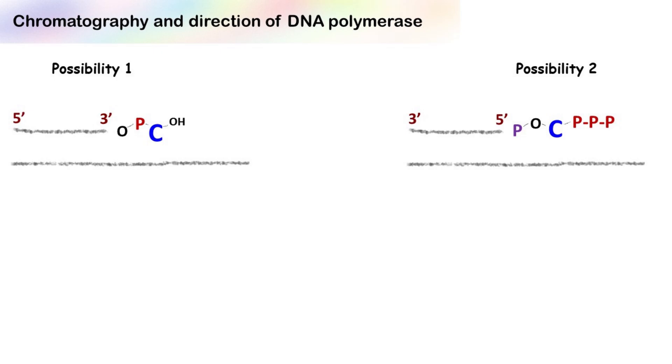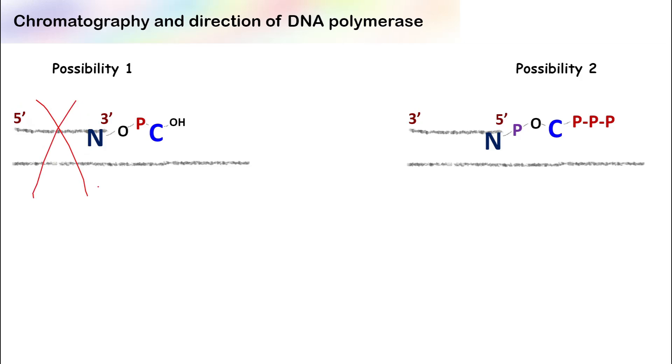Now after this reaction, the DNA was hydrolyzed. So when the DNA was hydrolyzed, this whole portion will be gone. Now let's say the nucleotide adjacent to cytosine is N. N can be any nucleotide out of four.